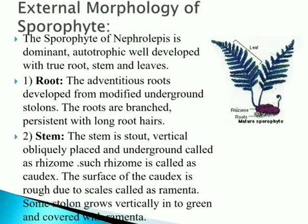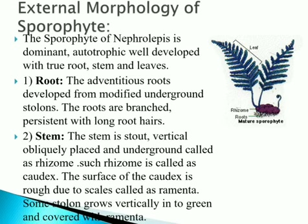Next is external morphology — how the plant looks. The plant has a rhizome at the basal side. At the underside of the rhizome, small adventitious root-like structures are present, and from the rhizome, leaf-like structures arise. The sporophyte of Nephrolepis is dominant, autotrophic, well-developed, with true root, stem, and leaves.